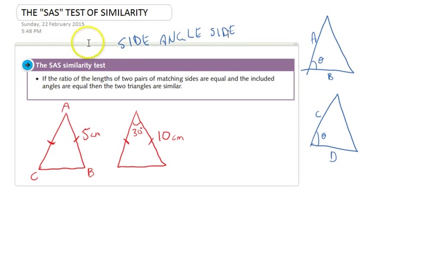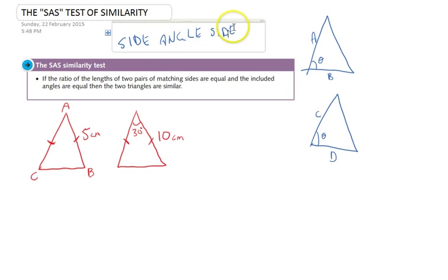Now SAS stands for Side Angle Side. So here's our definition of what that actually means. If the ratio of the lengths of two pairs of matching sides are equal and the included angles are equal, then the two triangles are similar.